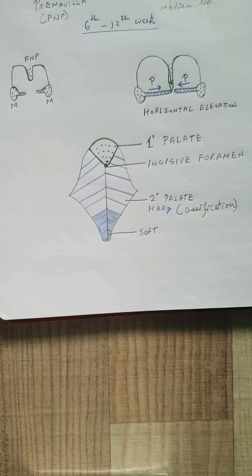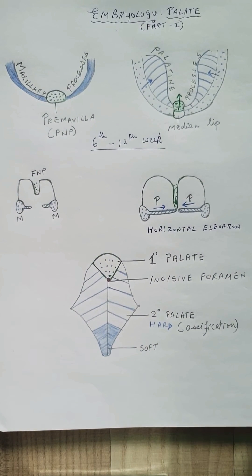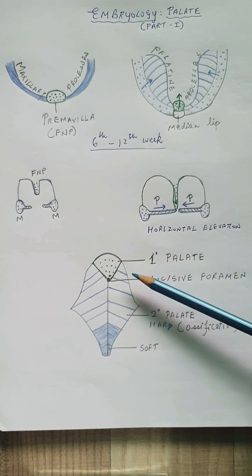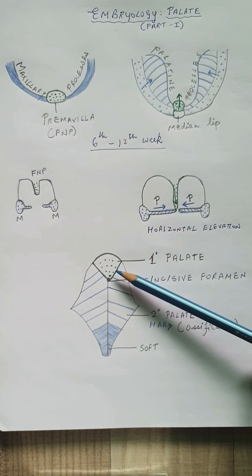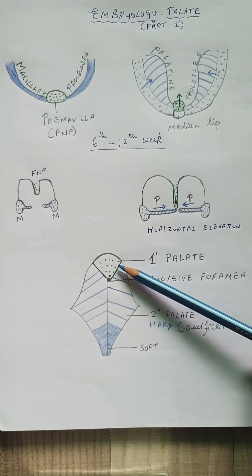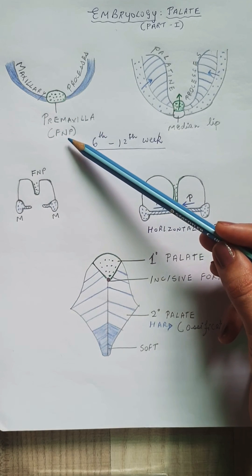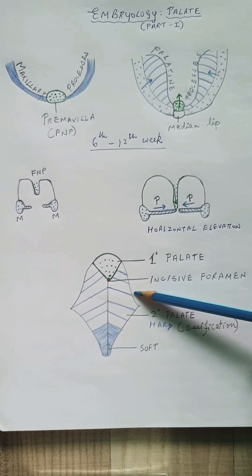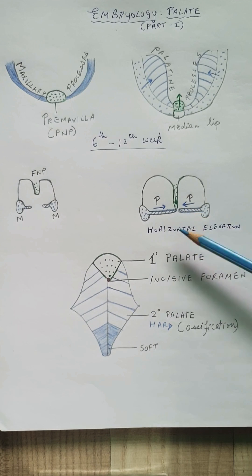It is important to remember that the palate consists of two parts: a primary palate and a secondary palate. This is essential to know when cleft palate is concerned. The distinction depends on whether the structure is anterior to the incisive foramen or posterior to the incisive foramen. The primary palate is the part that has come from the pre-maxilla, which is from the frontonasal process.